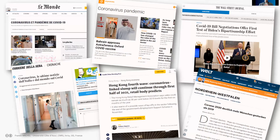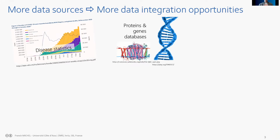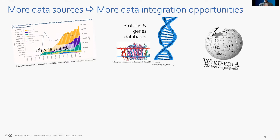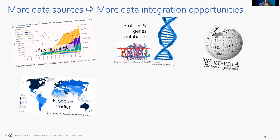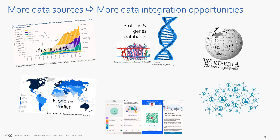Data integration, in very global terms, refers to all the methods that enable combining and making sense of heterogeneous data. In the case of the pandemic, as a scientist you may want to cross statistics about how the disease spreads with databases about proteins and genomes, crowdsourced information like Wikipedia, economic studies about average income, data from tracking applications developed in various countries, or social networks — tweets exchanged with specific hashtags.